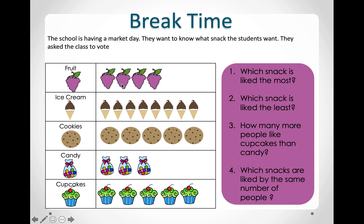We can count the pictures for each snack. Here we can see that ice cream is the snack liked the most, because we have the most number of ice creams. Now they ask us, which snack is liked the least? Which one do we have a small number of people liking? If you've guessed candy, well done. You are doing great.